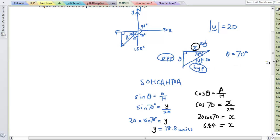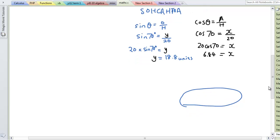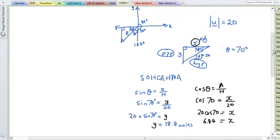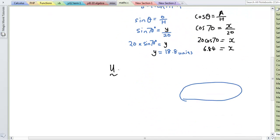So we have found the x and y components of this vector. So if we write it as a position vector, we can therefore say vector u is x times i plus y times j. So therefore vector u is equal to 6.84i plus 18.8j.